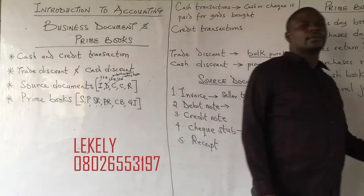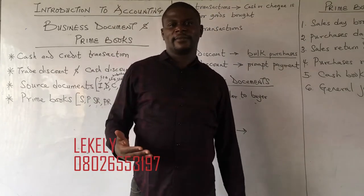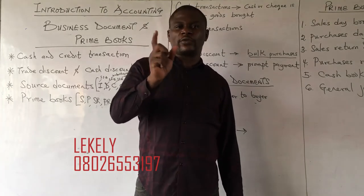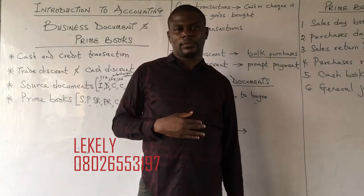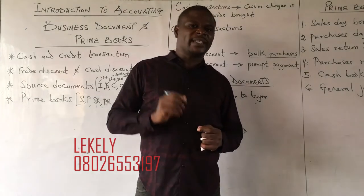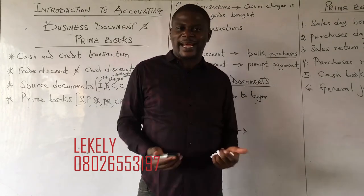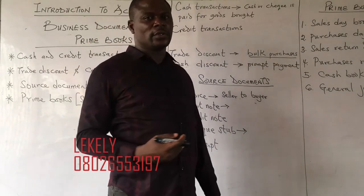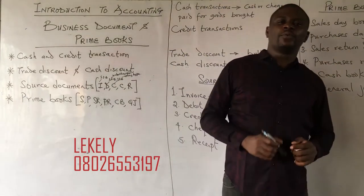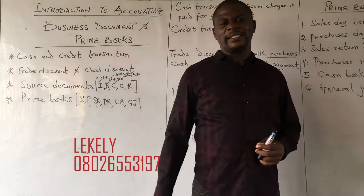The sales return day book is used when goods are returned. For example, if you sold 10 shoes to a buyer on credit and he returned 2 of them, you had recorded 10 shoes in the sales day book. Now that he has returned two, he won't pay for 10 anymore but for 8 — so you record the returned items in the sales return day book.